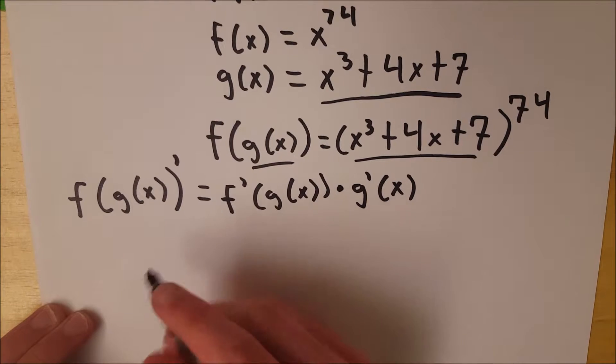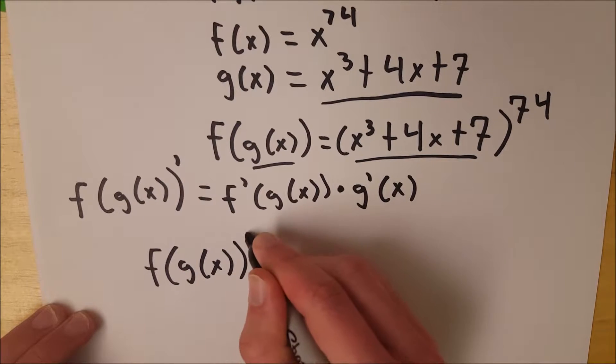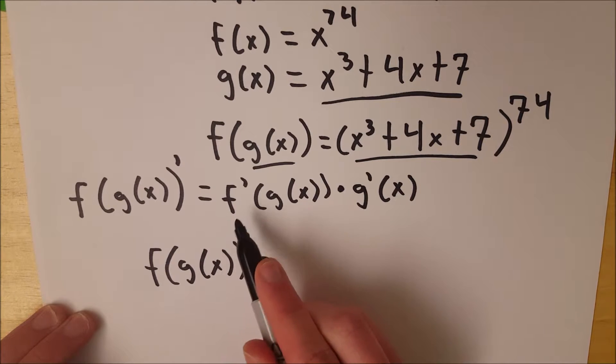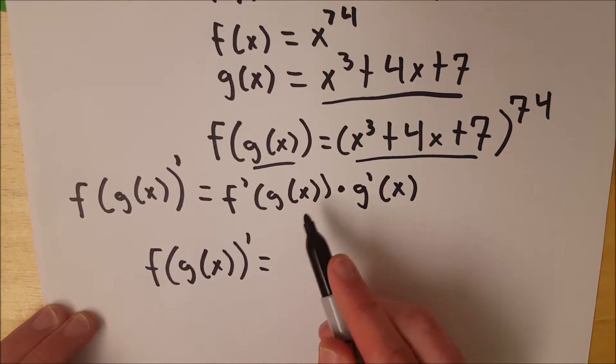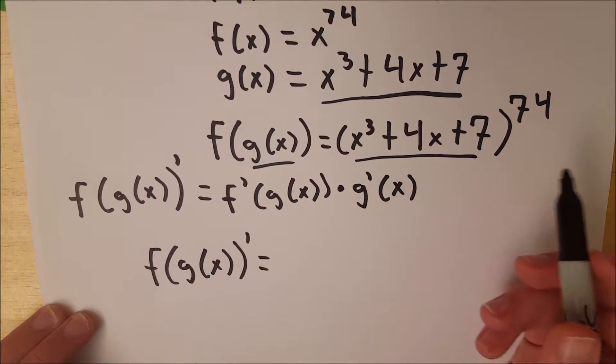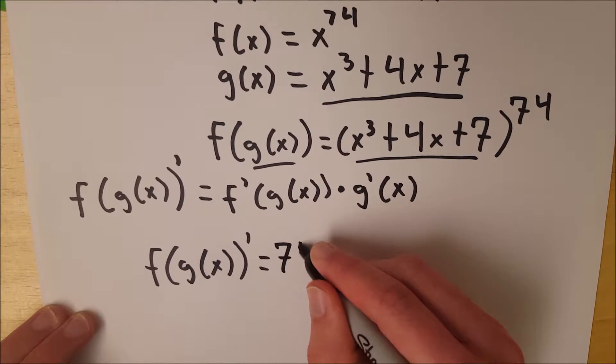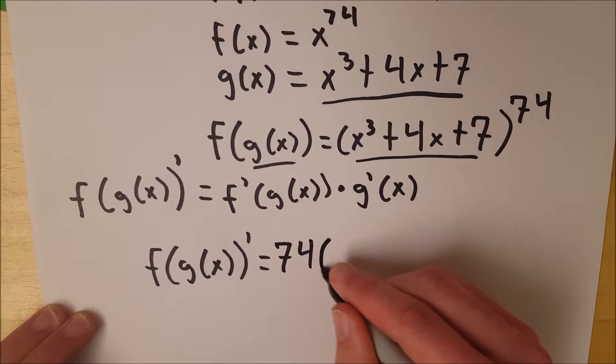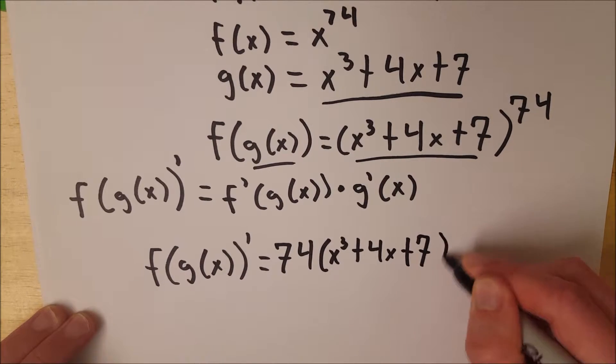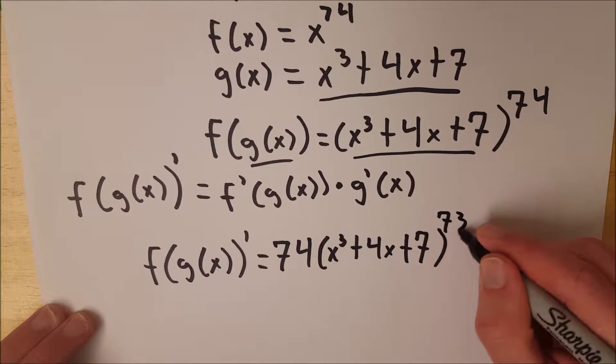So we are finding the derivative of f of g of x. This is equal to the derivative of the outside function, f prime, leaving the inside function the same, f prime of g of x. So we're just going to treat this as one big variable raised to the 74th power. We bring 74 down in front, leave this whole bit the same, so that's x cubed plus 4x plus 7, and then just like you would if this was just a normal variable, you drop the exponent by one and that gives us 73.